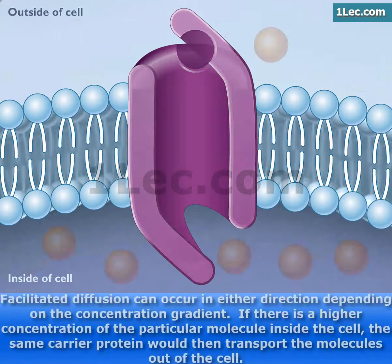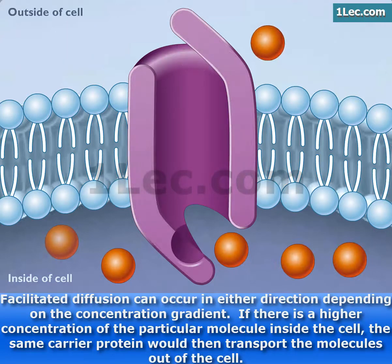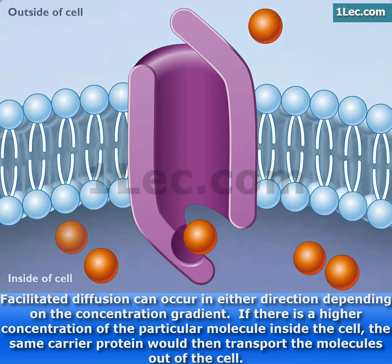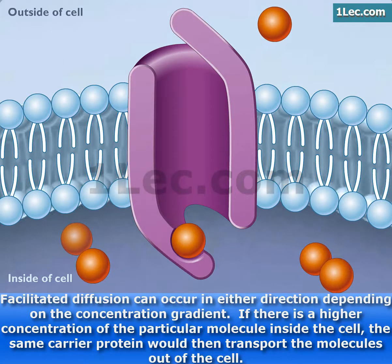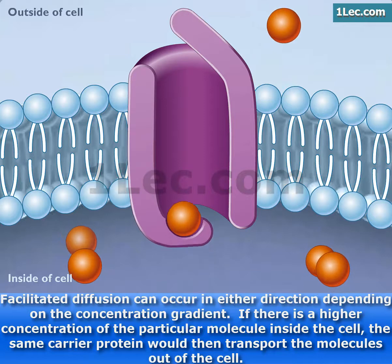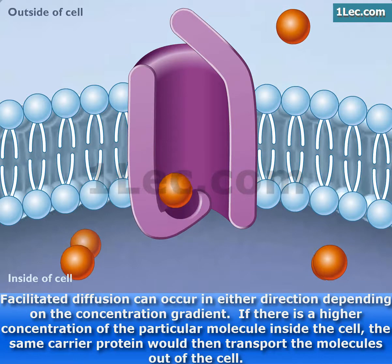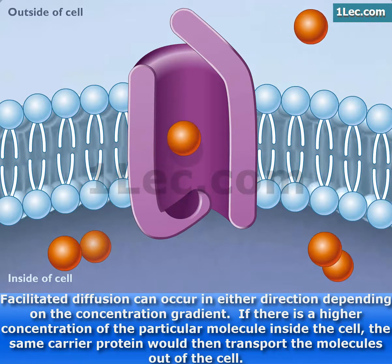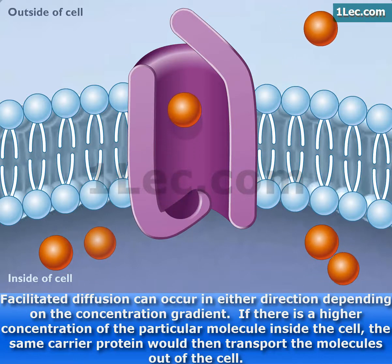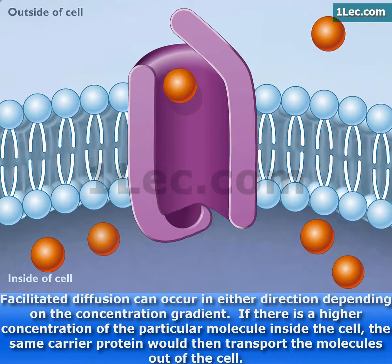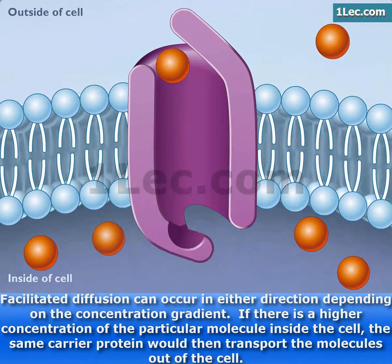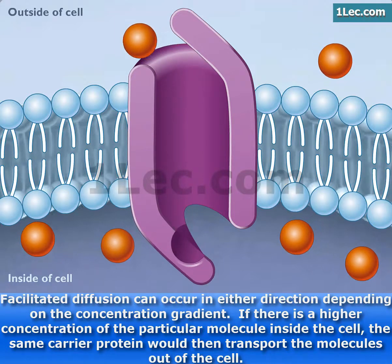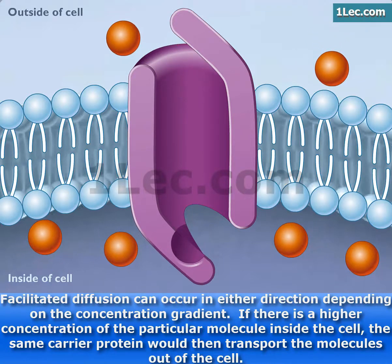Facilitated diffusion can occur in either direction depending on the concentration gradient. If there is a higher concentration of the particular molecule inside the cell, the same carrier protein would then transport the molecules out of the cell.